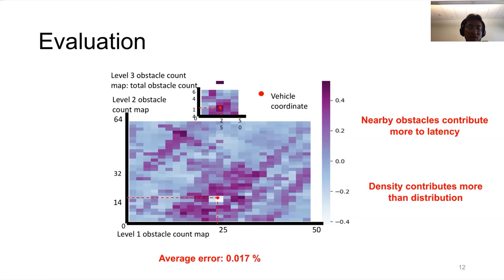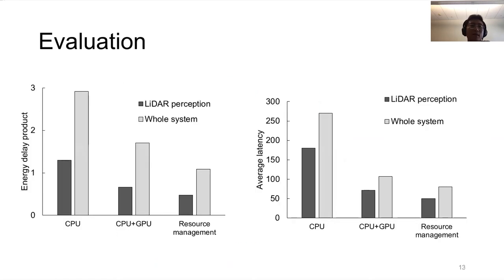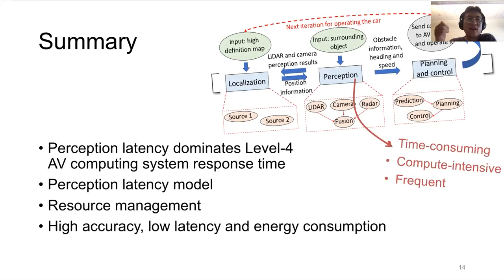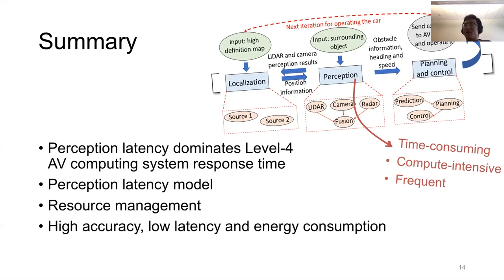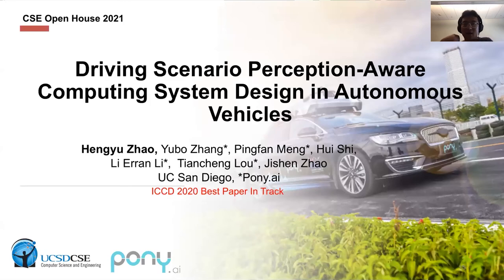This model achieves very low average error. With the proposed resource management, we can improve energy efficiency and also improve system performance for both LiDAR perception alone and the entire system. To summarize: we observe that perception latency dominates the Level 4 AV computing system latency. We propose a latency model to predict latency for a given obstacle distribution, and a resource management plan that optimizes latency. Our evaluation results demonstrate high accuracy, low latency, and better energy consumption.